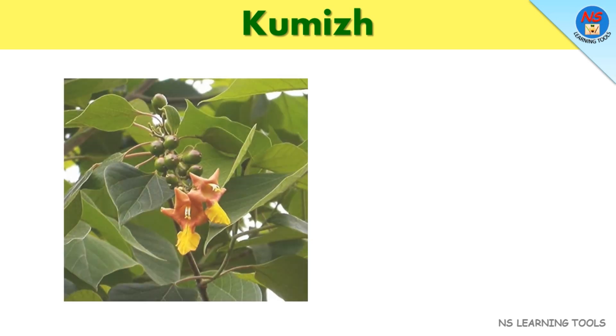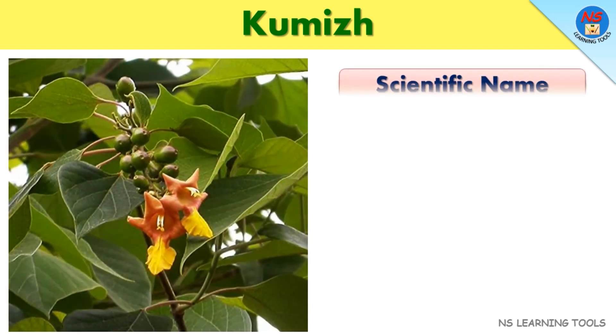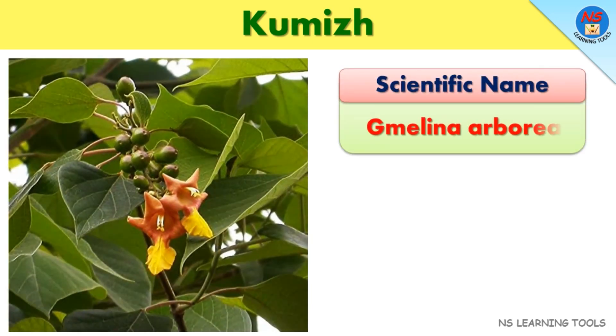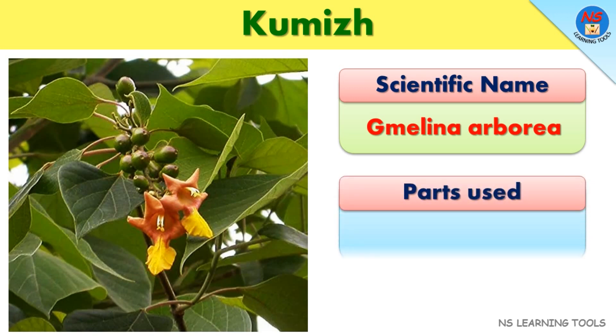Cumas. Scientific name: Blyna arboria. Parts used: Root, fruit.